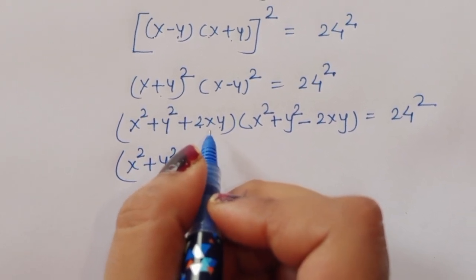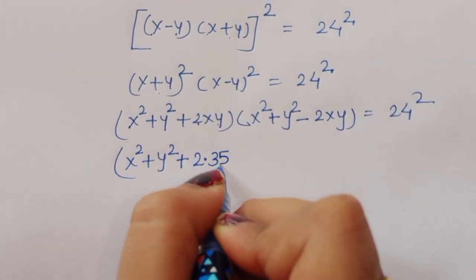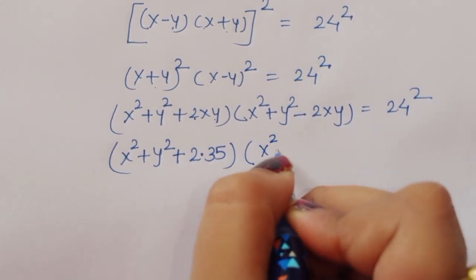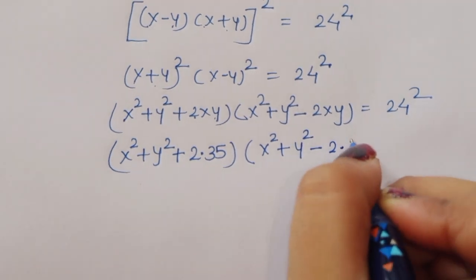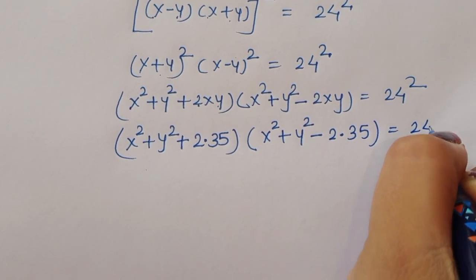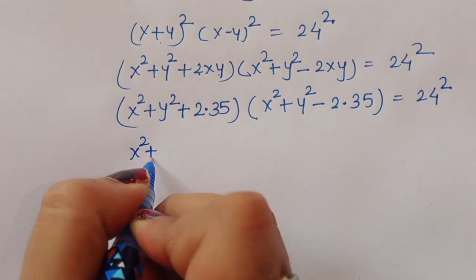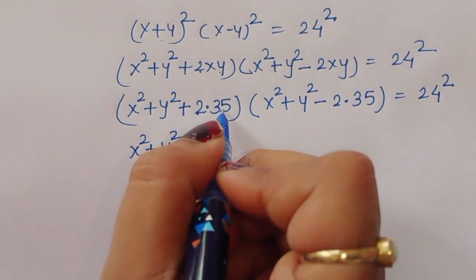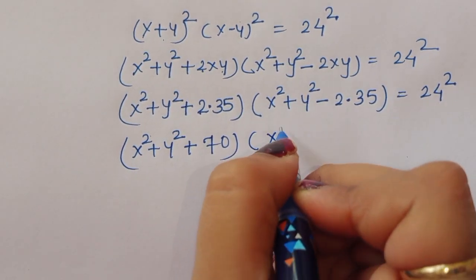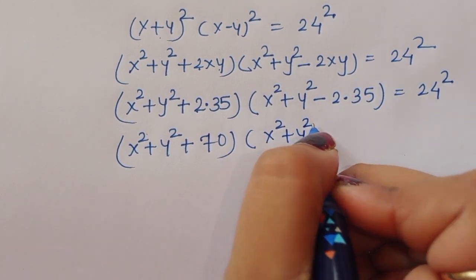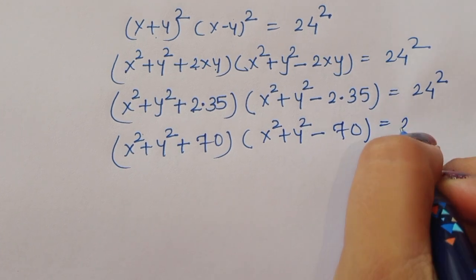Now the value of xy is already given in the question as 35. So we substitute here: x squared plus y squared plus 2 times 35, times x squared plus y squared minus 2 times 35, is equal to 24 squared. That gives x squared plus y squared plus 70, times x squared plus y squared minus 70, equal to 576.